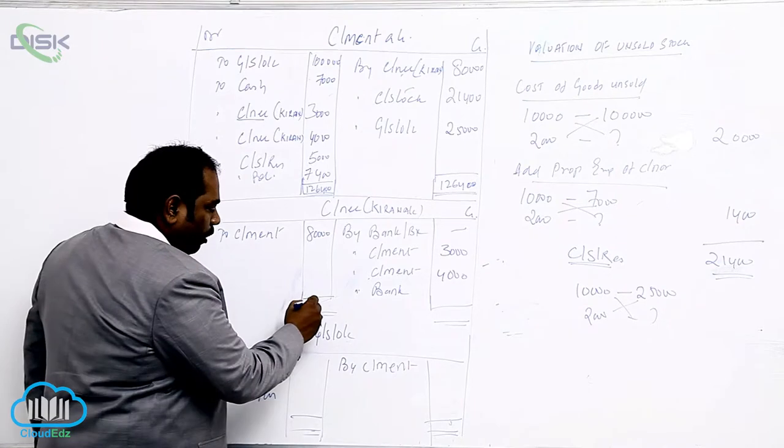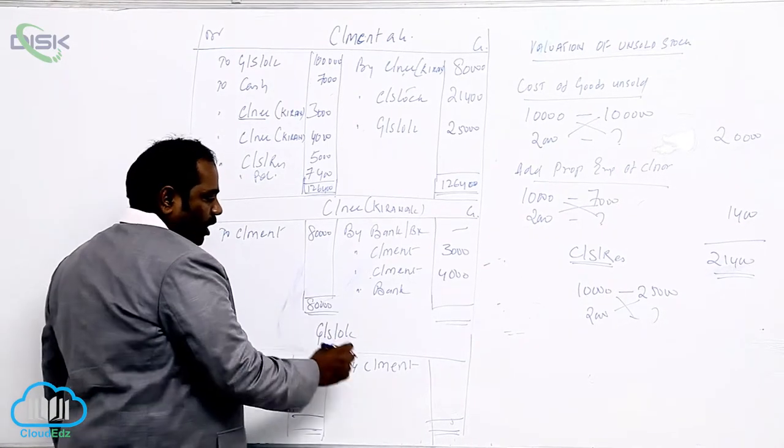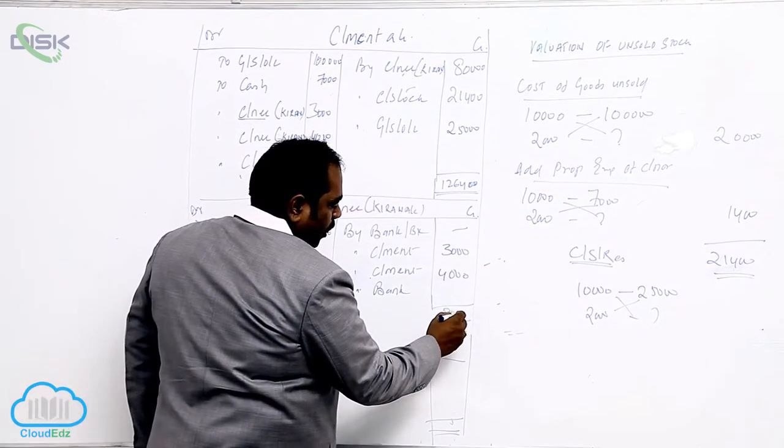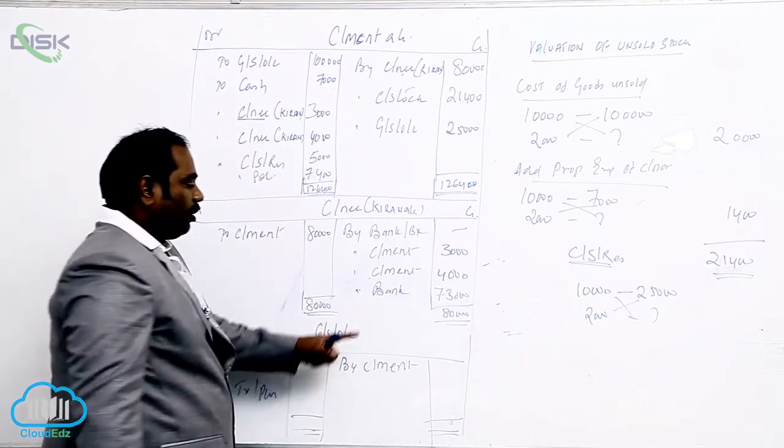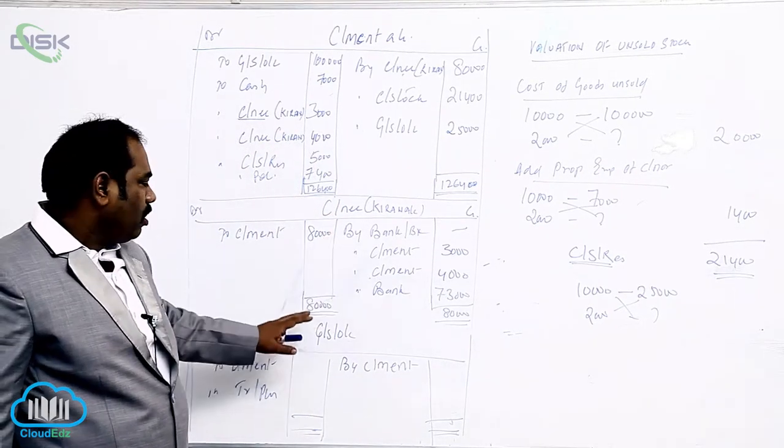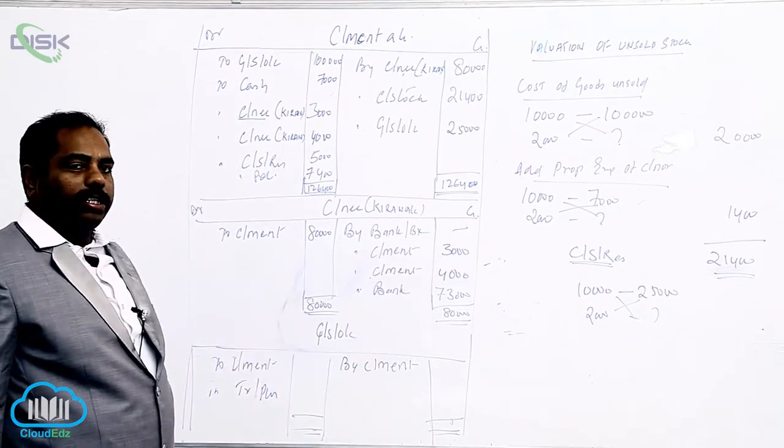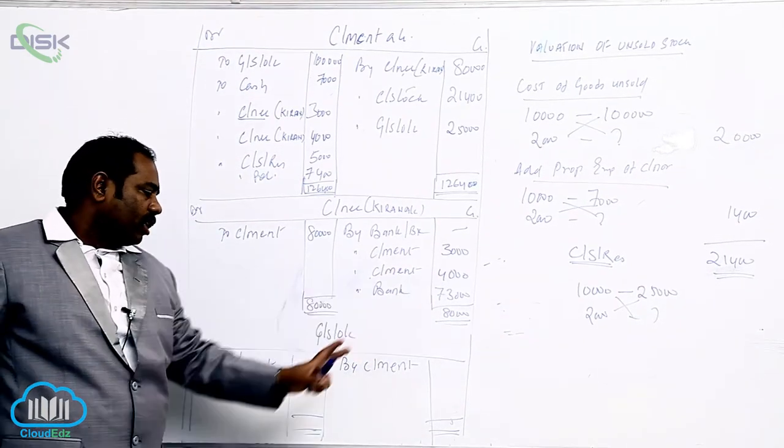Now, when you come to settlement amount, 80,000, 80,000, 73,000 is what? Settlement. The entry is what? Bank to consign. From 80,000 direct these two, whatever the balancing figure is there, that is what? 73,000 is what? Settlement.